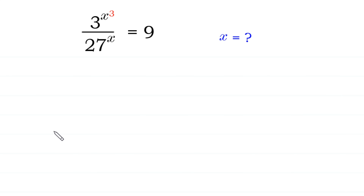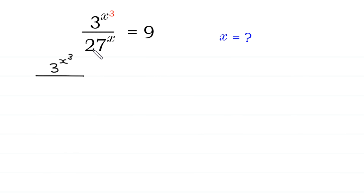Hello, welcome to how to solve this very nice exponential equation. 3 to the power x cubed over 27 to the power x is equal to 9. We can write this 27 as 3 cubed, whole to the power x, is equal to 9.